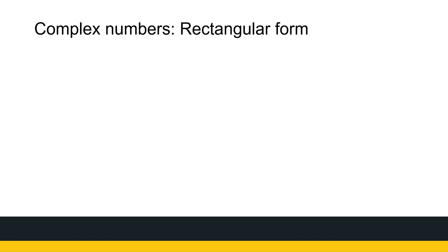This way of writing complex numbers — for example z equals four minus six i — is called rectangular form. There will be other ways of representing complex numbers, but for now we're looking at rectangular form, and we're going to be looking at operations in rectangular form.